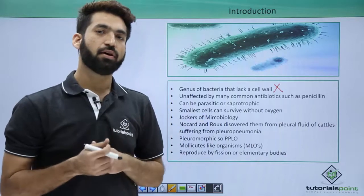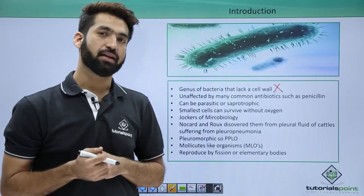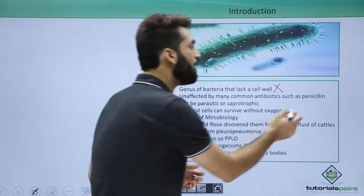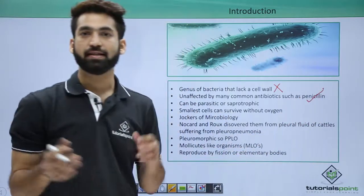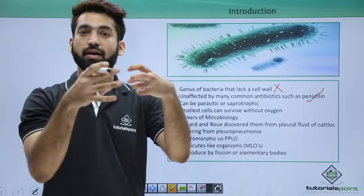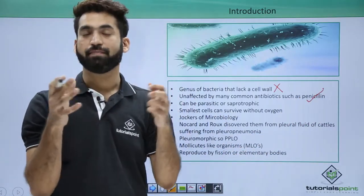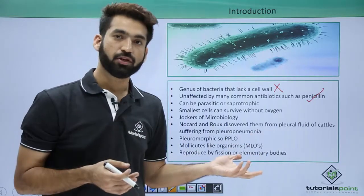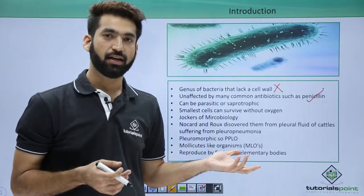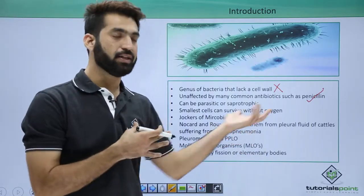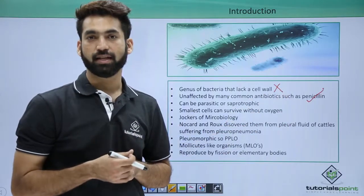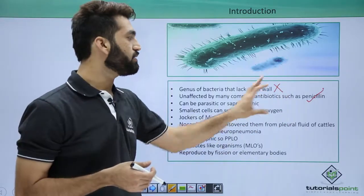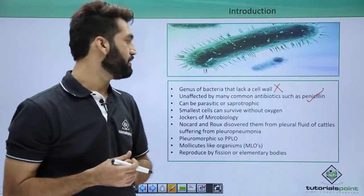Because they are wall-less or without peptidoglycan, they cannot be inhibited by penicillin, so they are penicillin resistant. Penicillin acts on the peptidoglycan layer and kills bacteria, but Mycoplasma don't have a peptidoglycan layer, so they don't get killed by penicillin. They are resistant to penicillin.